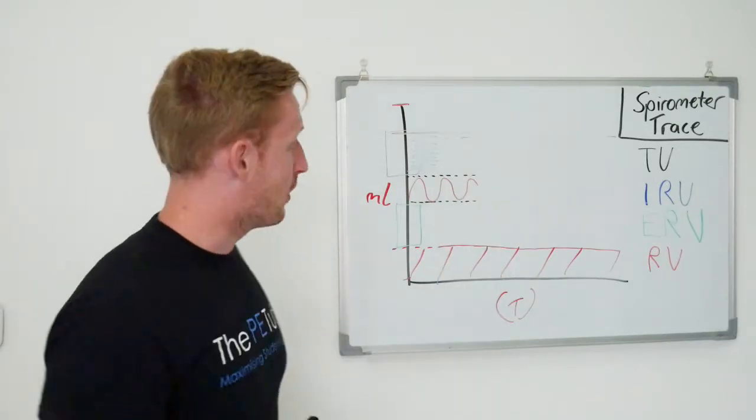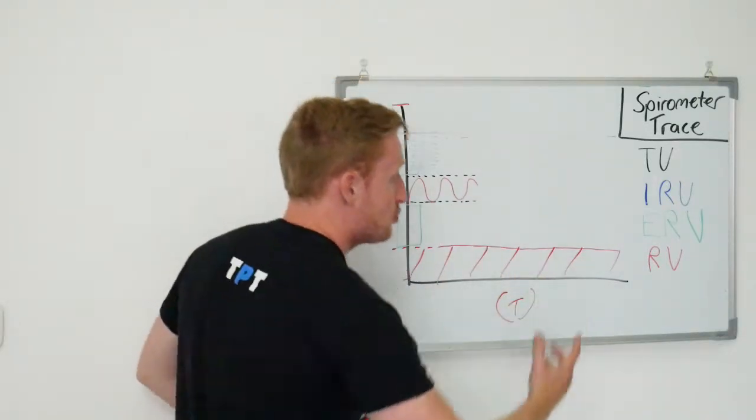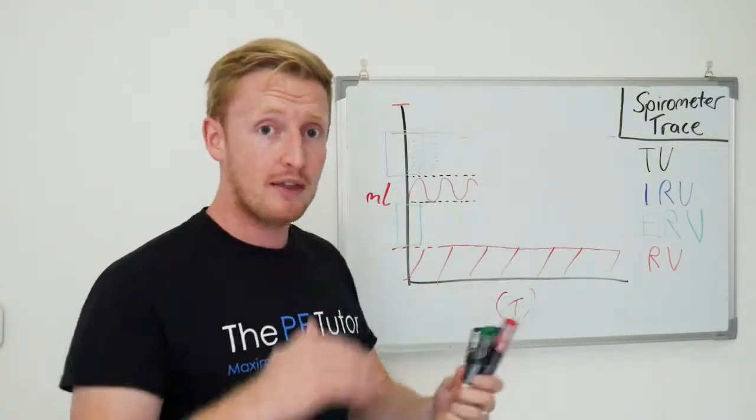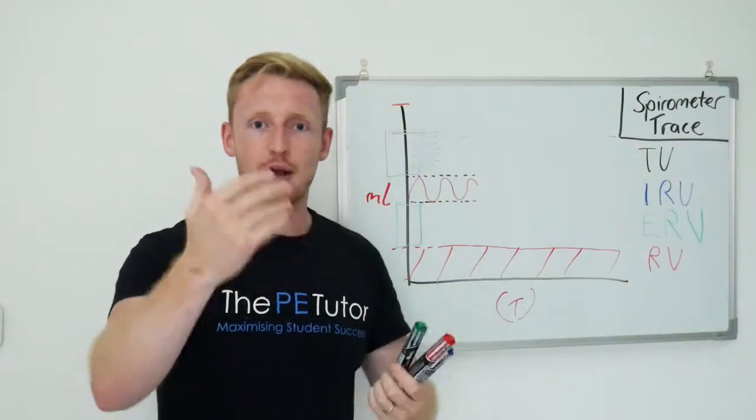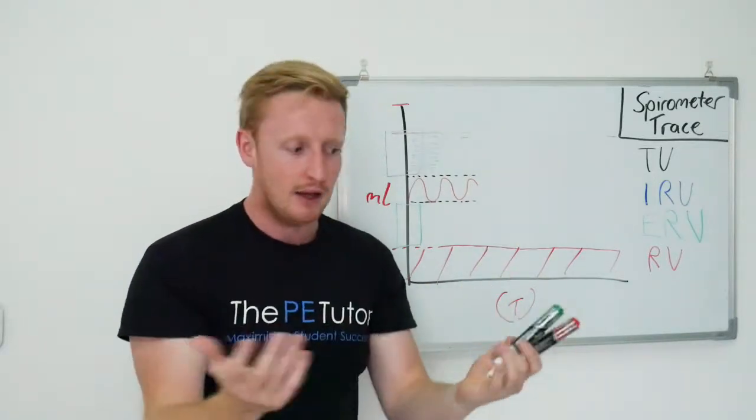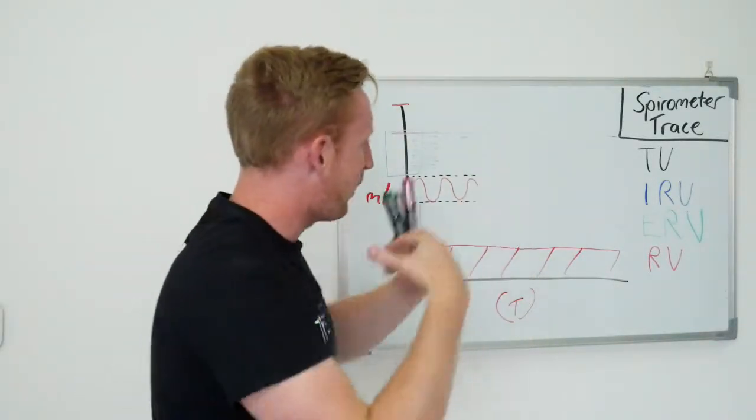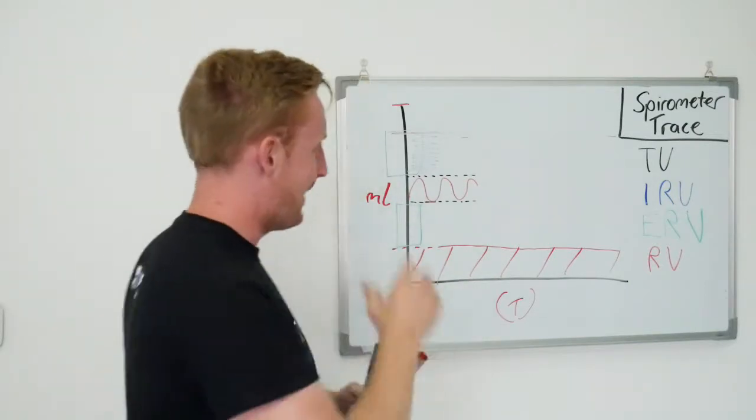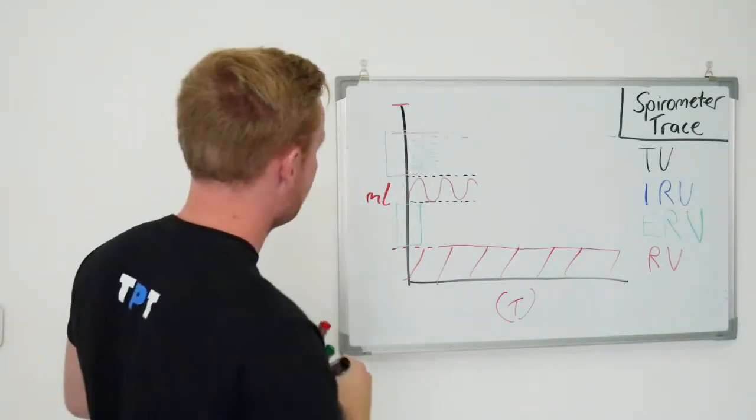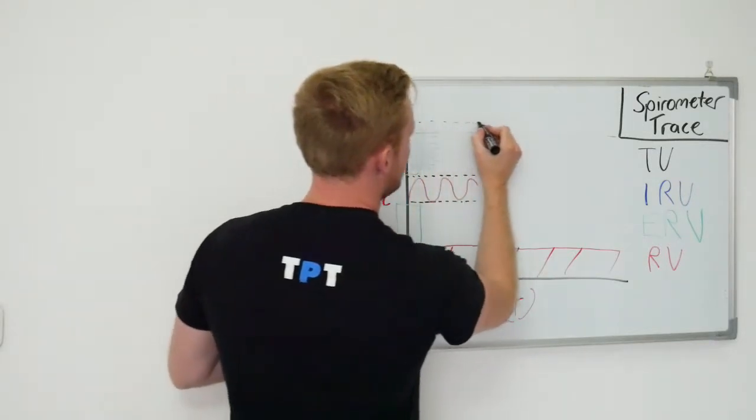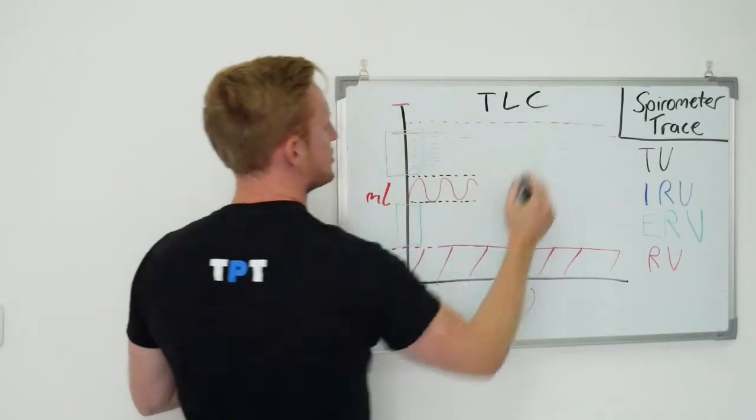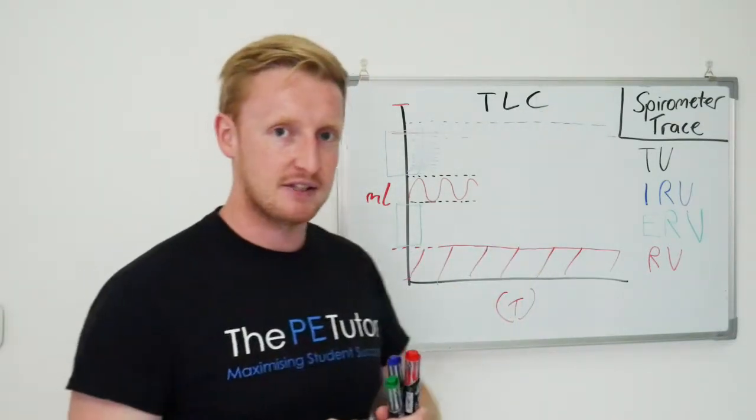But, again you can try this one at home as well, if you try and take an absolute maximum inhalation, you'll find that there's a limit. Just like a balloon has its peak, just like a water bottle can't fill up past its brim, our lungs have a maximum capacity. What we call that is our TLC, Total Lung Capacity.